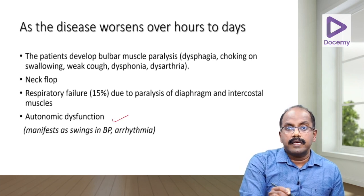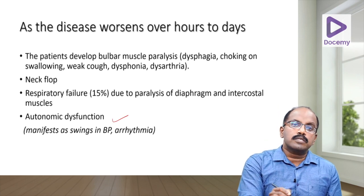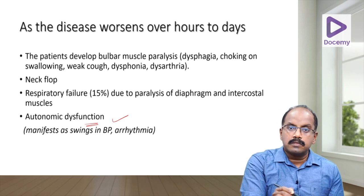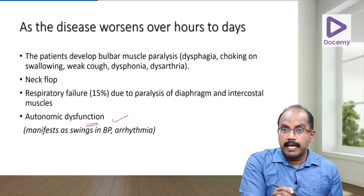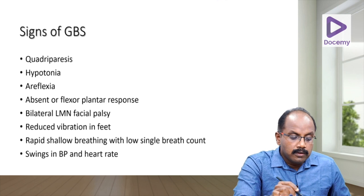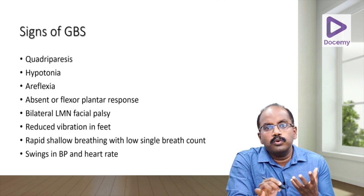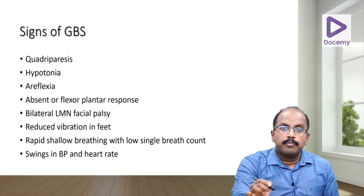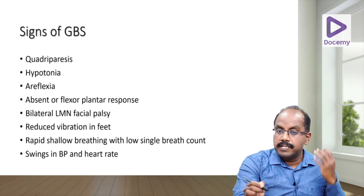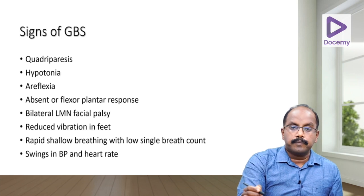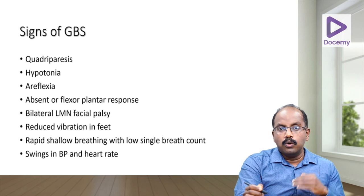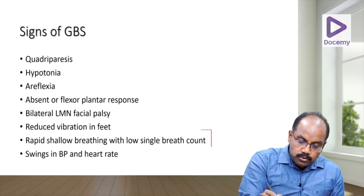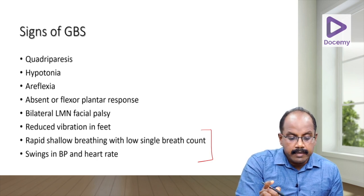Autonomic dysfunction is extremely important — it can produce dangerous swings in blood pressure and heart rate, and cause sudden fatal arrhythmias. On examination, patients present with quadriplegia, hypotonia, areflexia, absent or flexor plantar response, bilateral facial palsy, reduced vibration in the feet, and shallow rapid breathing with a low single breath count. Swings in blood pressure and heart rate indicate high fatality risk.